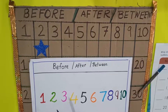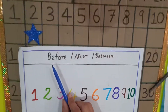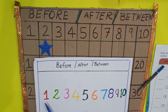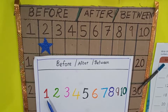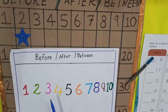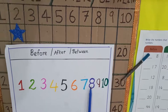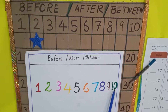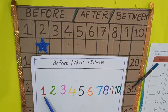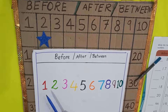Hello children, today we are learning the concept of before, after, and between. I hope all of you know the counting. Let's count with me: one, two, three, four, five, six, seven, eight, nine, and ten. Now see, I have written the numbers in different colors.